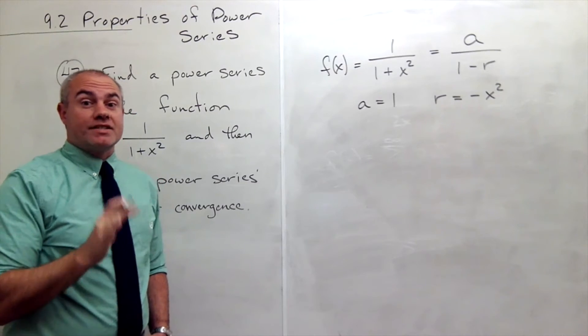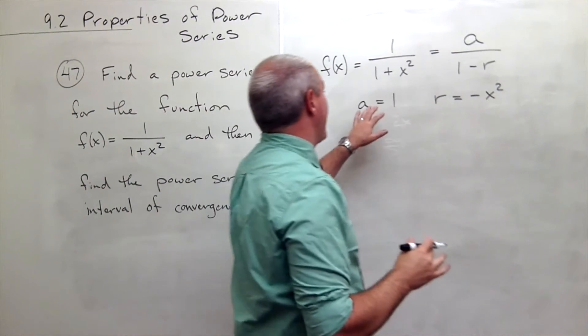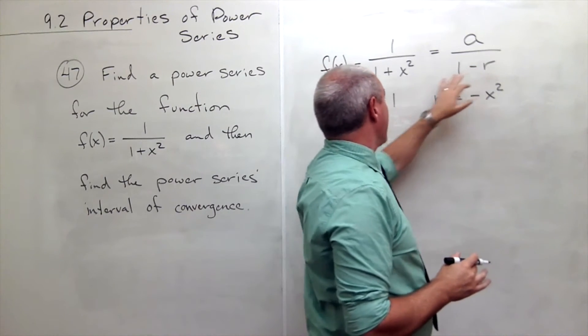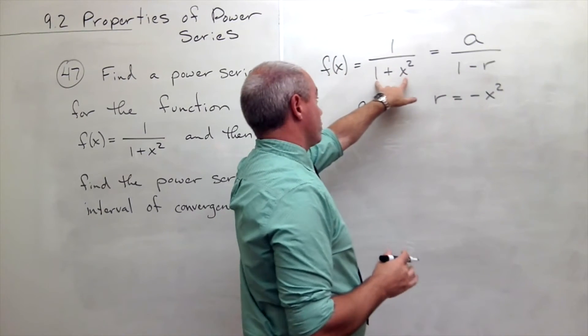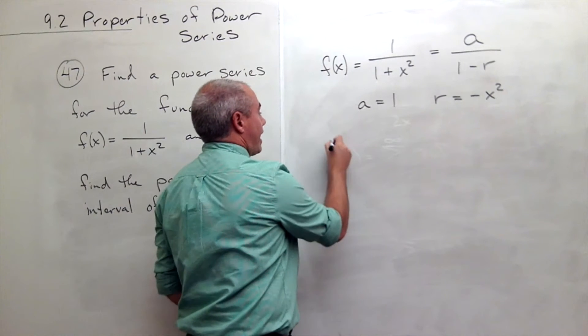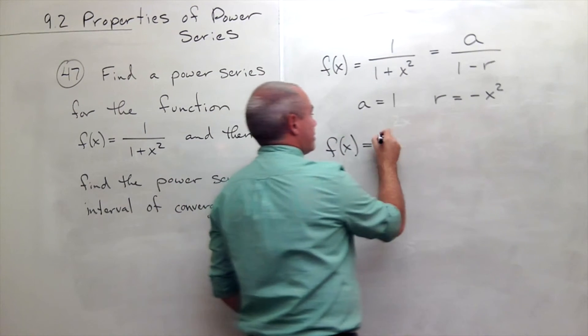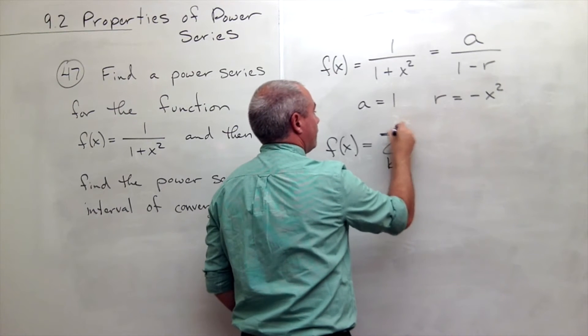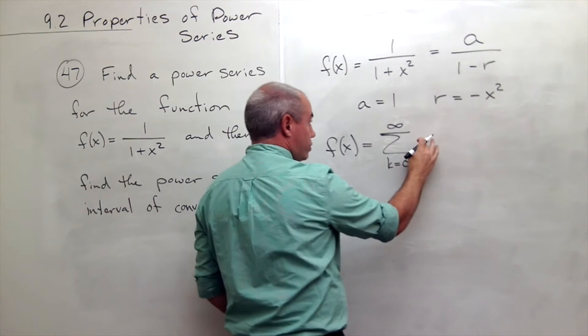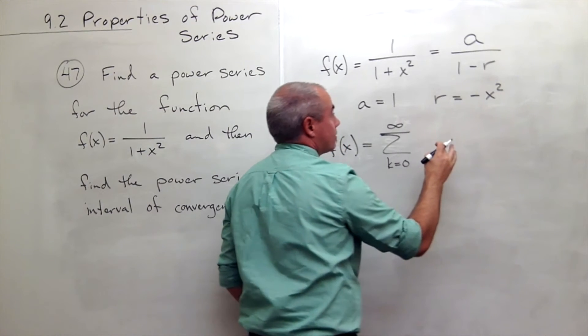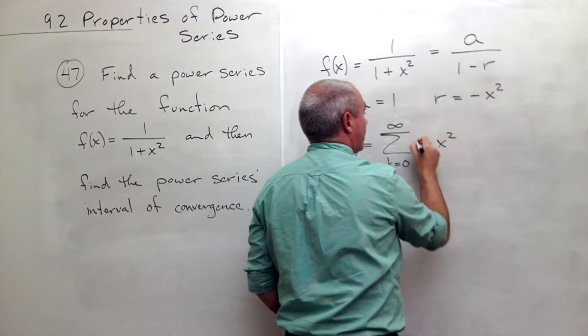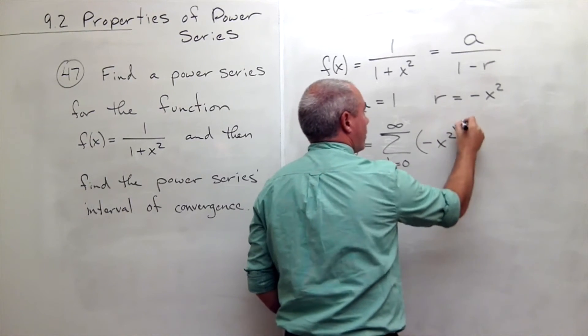So if that's the case that we have this form 1/(1-(-x²)), which is what I have, then I can write f(x) as a power series sum k going from 0 to infinity of a, which is 1, times r, which is -x², raised to the power k.